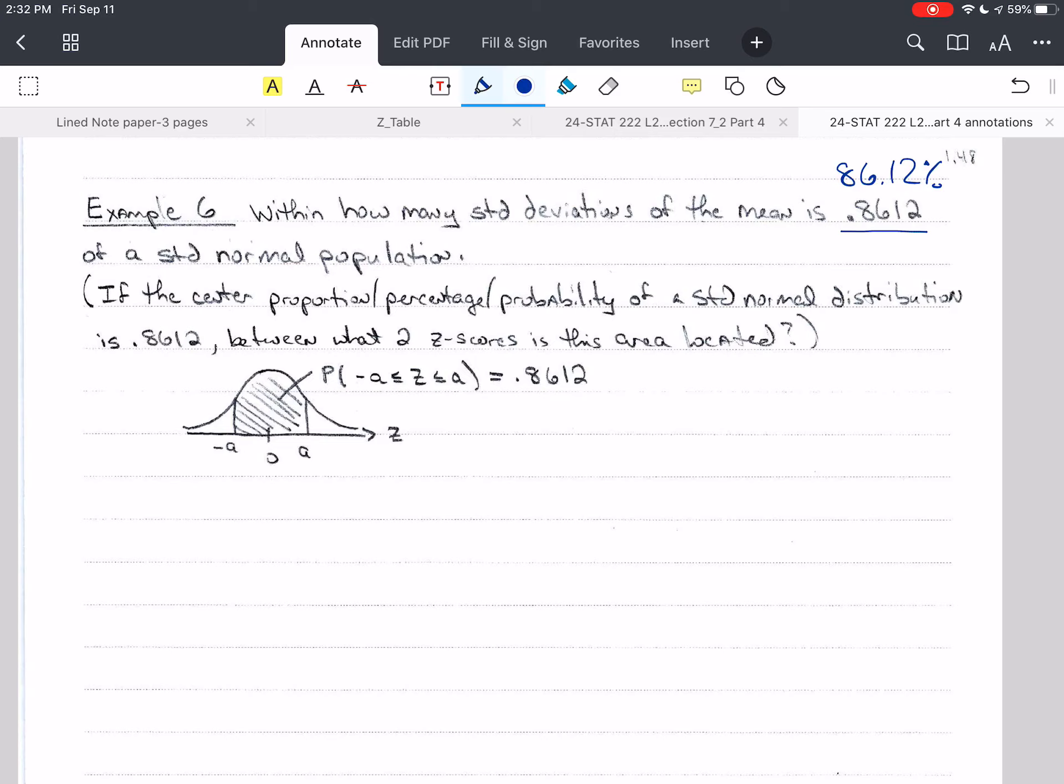But another way to ask the question, the same question, but we would have to give two values of z-scores, is if the center proportion of a standard normal distribution is 0.8612, between what two z-scores is this area located? So I've drawn a picture. In both cases, it's the same picture because it's really the same question, but asked in two different ways.